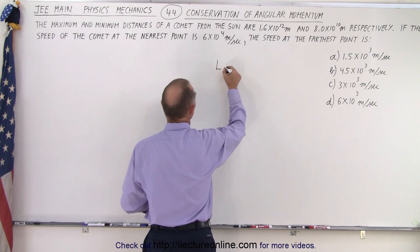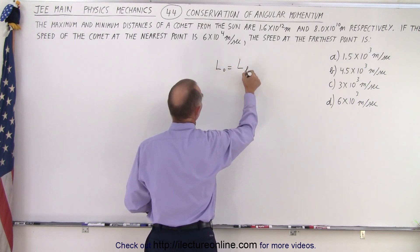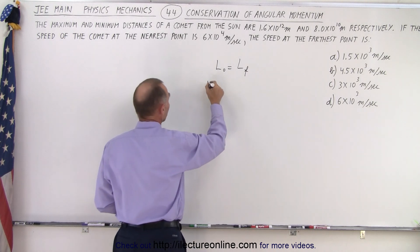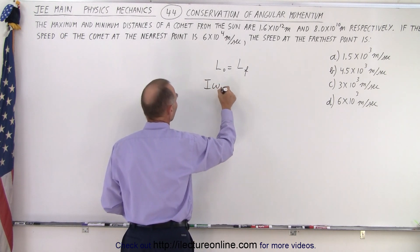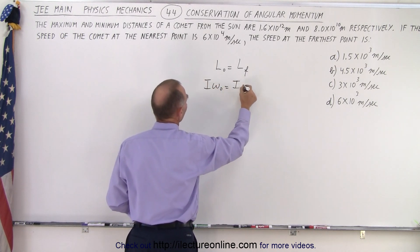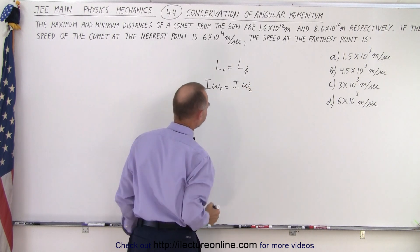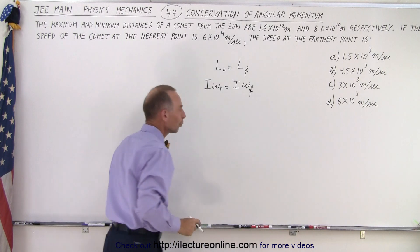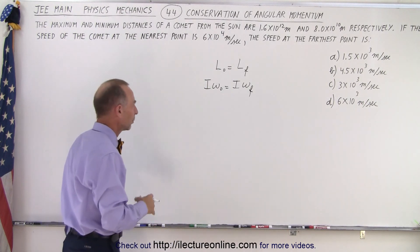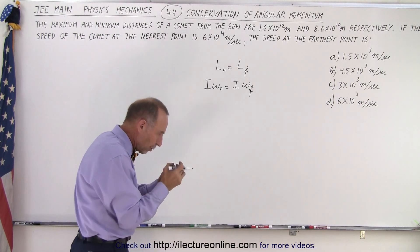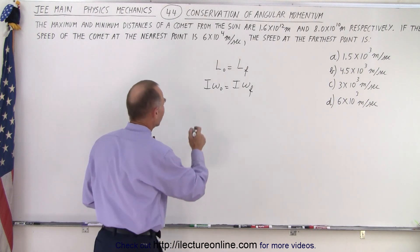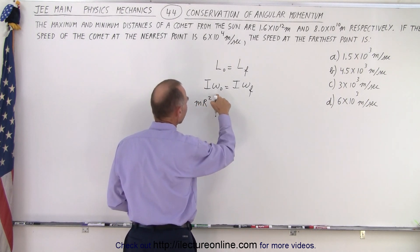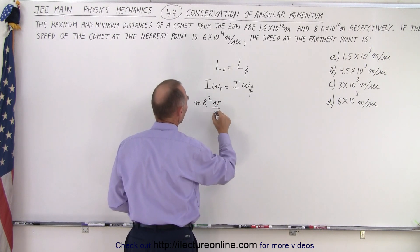We know that L initial must equal L final. The equation for angular momentum is the moment of inertia times the angular velocity: I₁ω₁ = I₂ω₂. Since it's a point mass going around the sun, the moment of inertia is MR², and omega can be written as V over R.